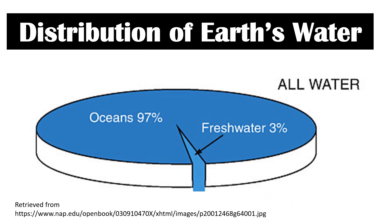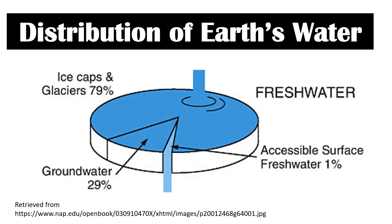Let us focus on how water is distributed on our planet. More than 75% of the surface of our planet is covered by water. Of this, 97% is salt water found in the ocean, and only 3% is fresh water. Out of that 3%, 79% is frozen in ice caps and glaciers, 29% is underground — referred to as groundwater — and only 1% is readily available for consumption, referred to as surface fresh water.